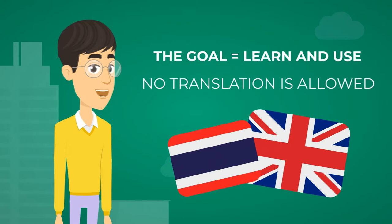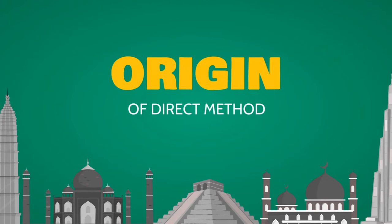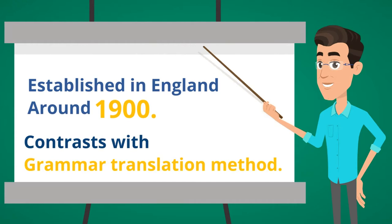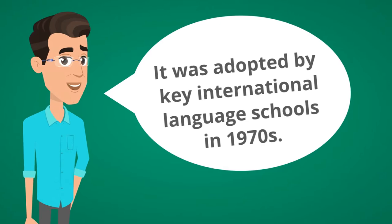The direct method was established in England around 1900, and it contrasts with the grammar translation method. It was later adopted by key international language schools in the 1970s.